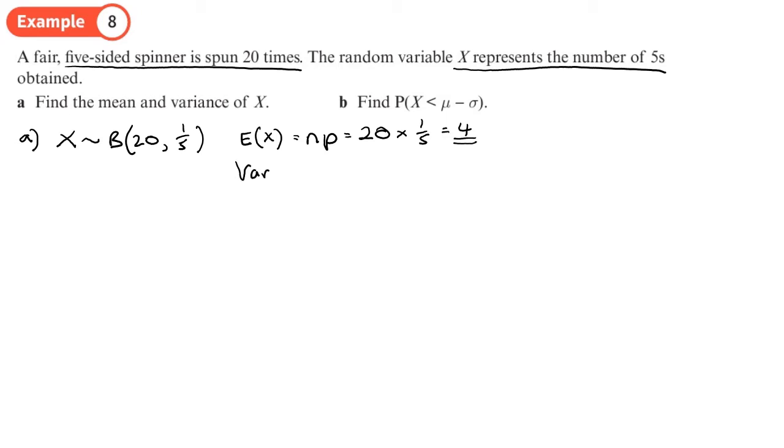And the variance of this distribution is going to be n times p times 1 minus p. So that's going to be 20 times a fifth again, which I know is 4, times by 1 minus a fifth, 1 minus p. So I get 4 times 4 fifths, which is 16 over 5, which is 3.2. So there's my variance.